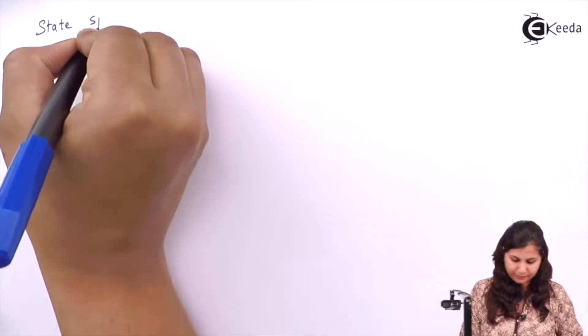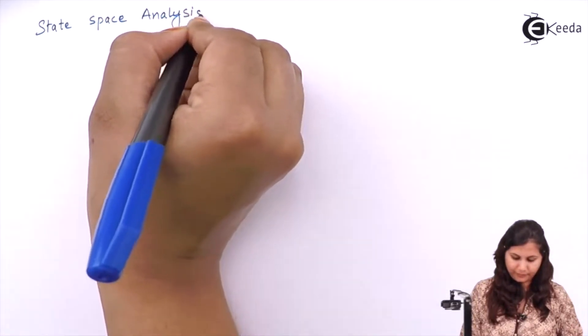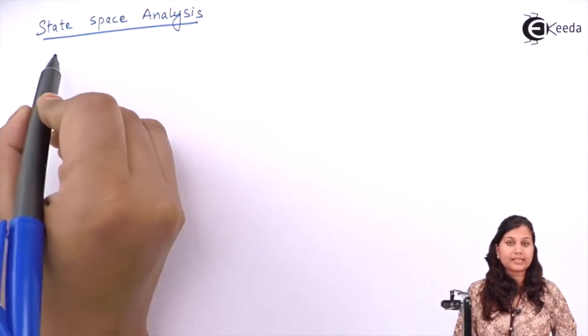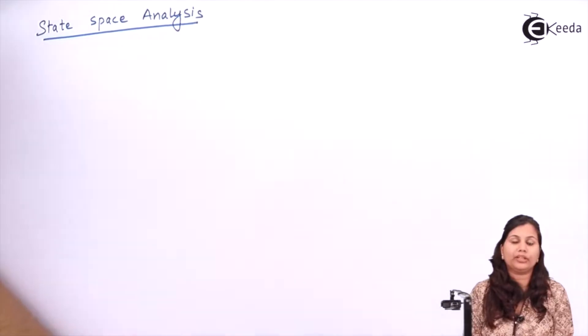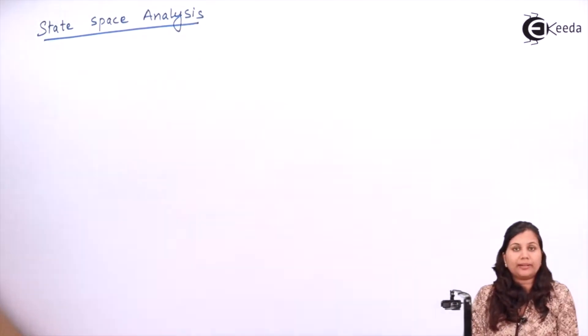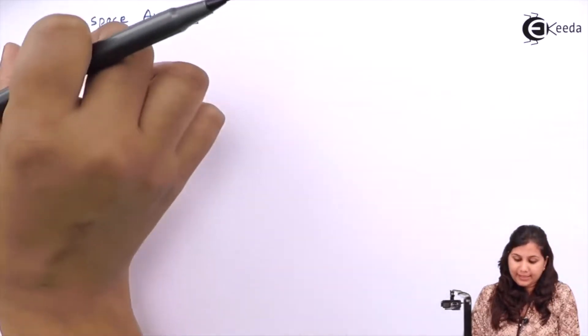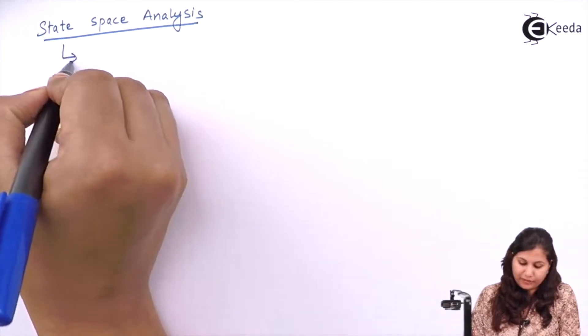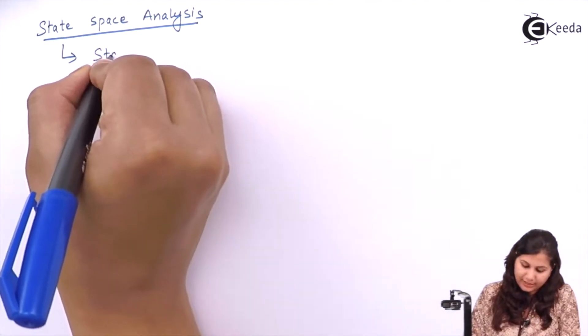Hello friends, in this video we are going to study about the definitions of state, state variables, state space, and state vector. This is the basic terminology of the state space analysis. The representation of a system in state space analysis is known as the state space representation.